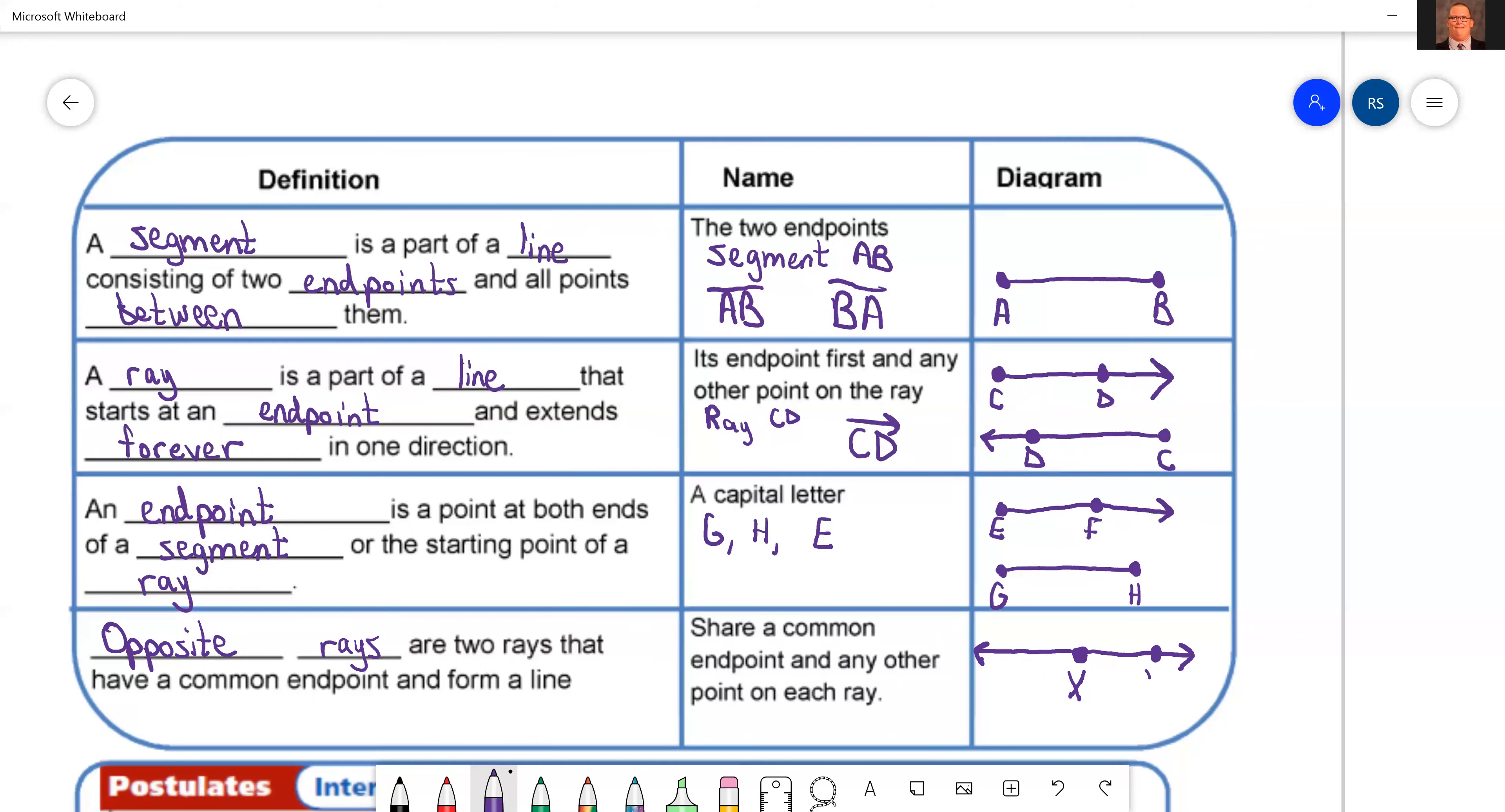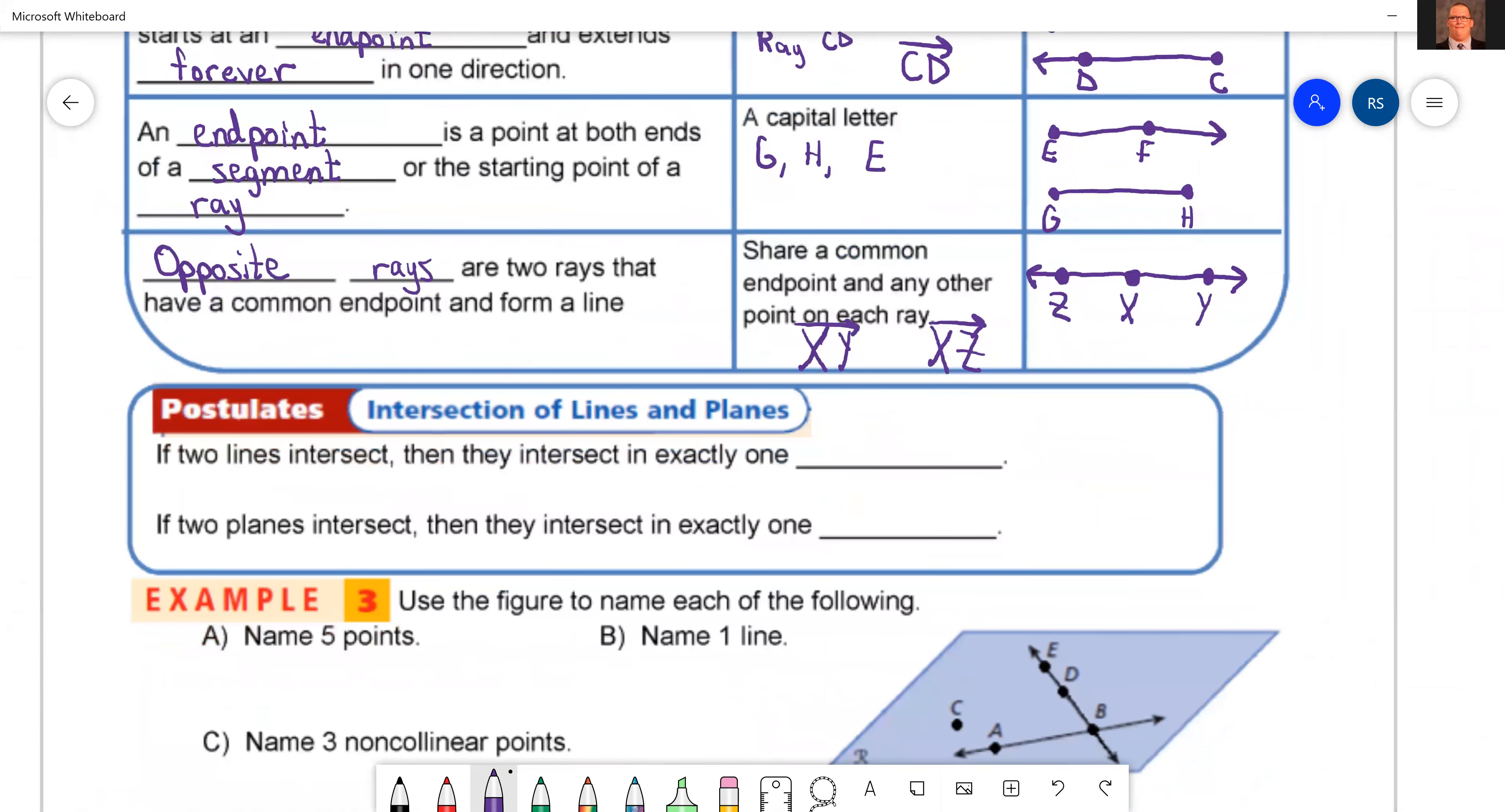I'm going to have a point over here called Y, a point over here called Z. So our opposite rays would be X, Y and X, Z. I don't like how my X's are coming out. X, Y and X, Z. Those are our opposite rays. Notice the X came first on both because X is where they start. They both started at X and then go in opposite directions.